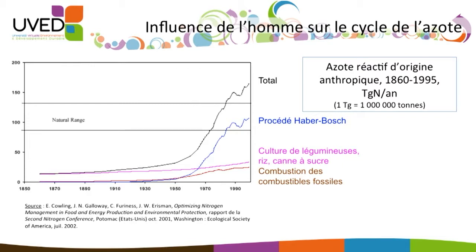By the way, the word nitrogen means 'with no life.' So it's not reactive when it's in the atmosphere, and when it penetrates the biosphere, it creates reactive molecules. The two straight lines that you can see on this graph give us an indication of the quantities of nitrogen which are naturally circulated in the biosphere and which allow the biosphere to operate properly. The other graphs give us an indication of entropic nitrogen which also circulates within the biosphere.